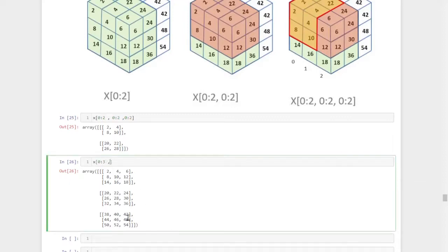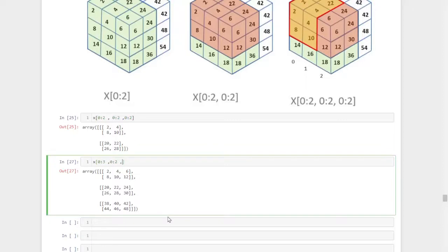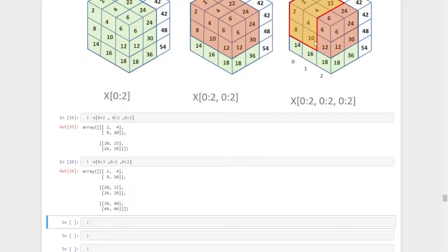Then row-wise, how many we need? 0 and 1. So here 0 up to 2, 2 rows we got. Then again, 0 up to 2. So I got 2, 4, 8, 10, 20, 22, 26, 28 and 38, 40 and the one behind also, 44 and 46.